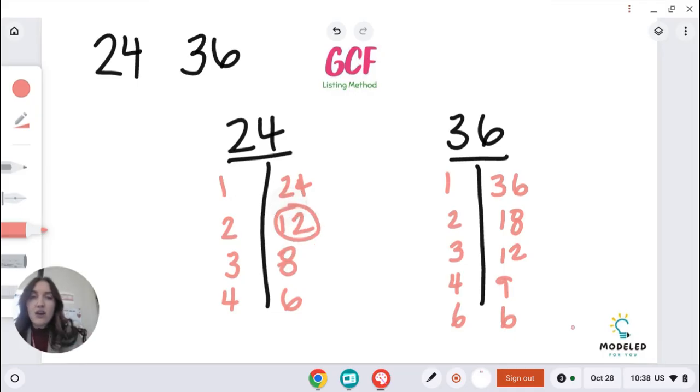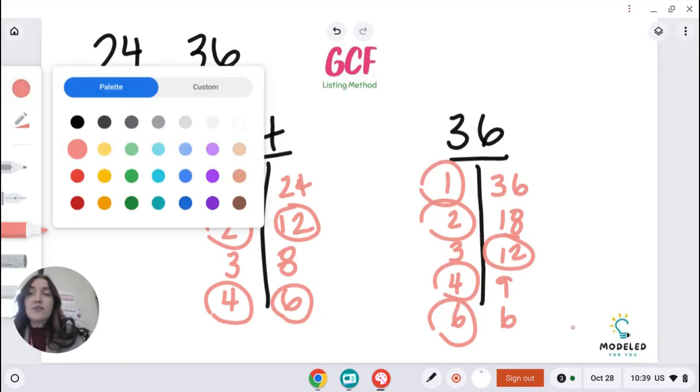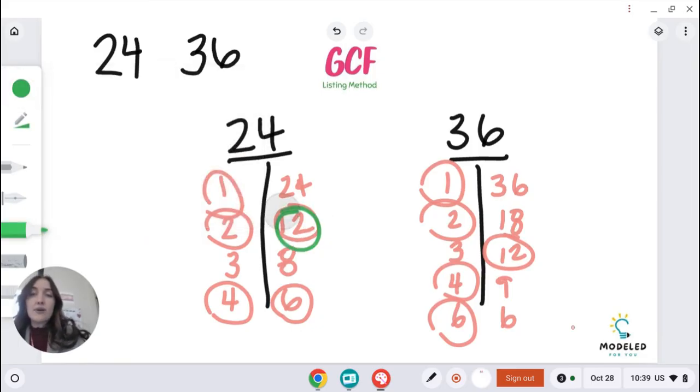So I know they have this in common. They also have 2 in common. 1 is in common. They have a lot in common. 4 is in common. And 6 they have in common. They got a lot of numbers in common. But there's only one number that's the greatest, and that number is 12.